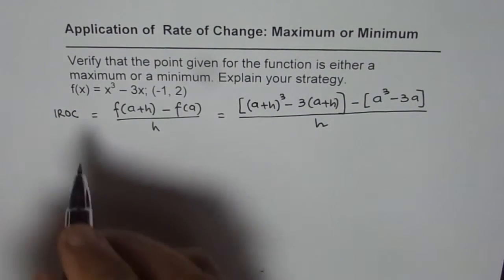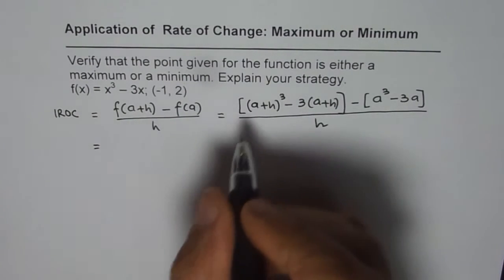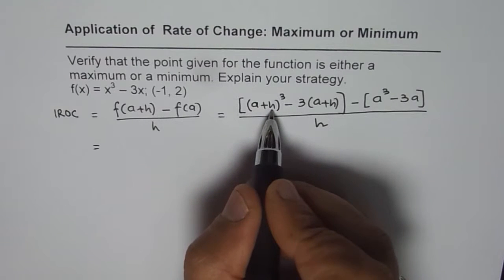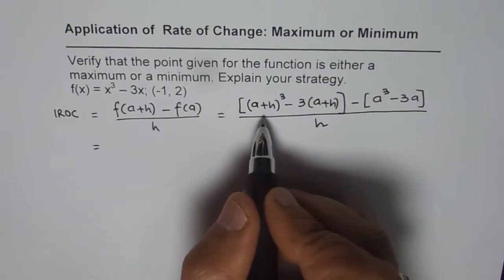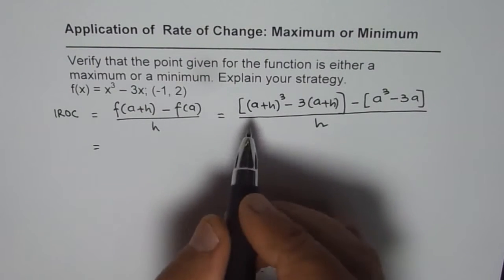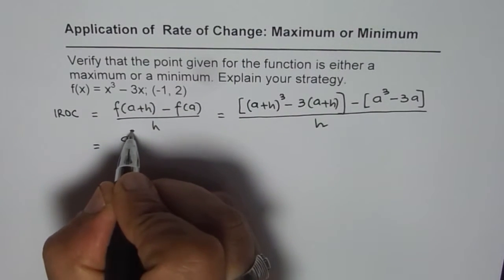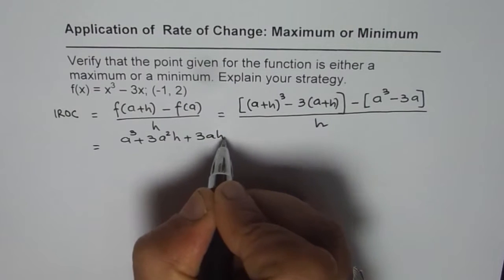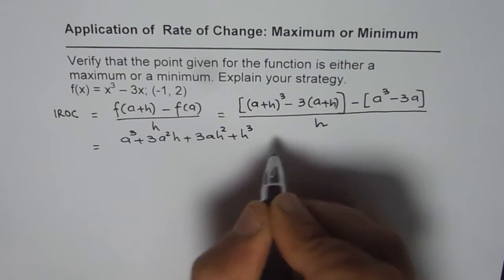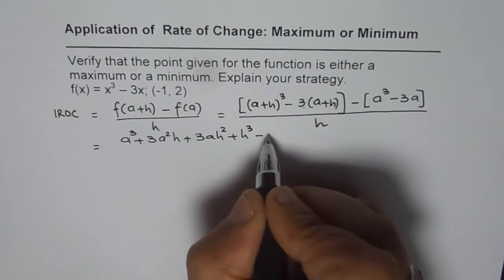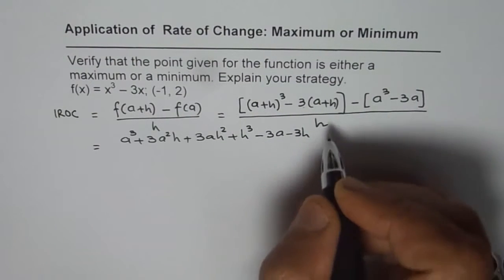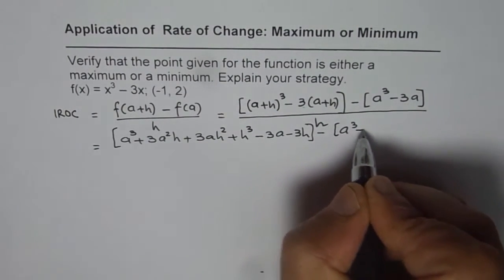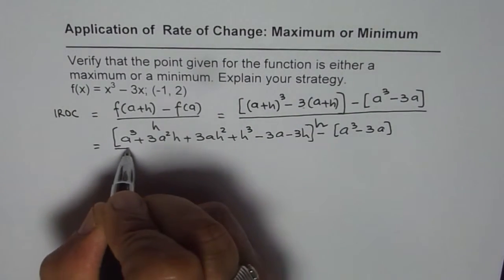Now let us expand (a+h)³. I hope you remember the formula — it is a³ + 3a²h + 3ah² + h³. You can always use Pascal's triangle to figure it out. So let me expand this: a³ + 3a²h + 3ah² + h³, minus — opening this bracket — minus 3a minus 3h. Then minus a³ minus 3a, all divided by h.